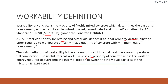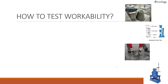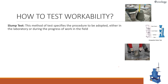This definition is given by Indian Standards in IS code book 1199. To test workability, you can do so both on site and in the laboratory. The first method is the slump test, which specifies the procedure to be adopted either in the laboratory or during the process of work in the field. A separate video on these tests can be made if requested in the comments.